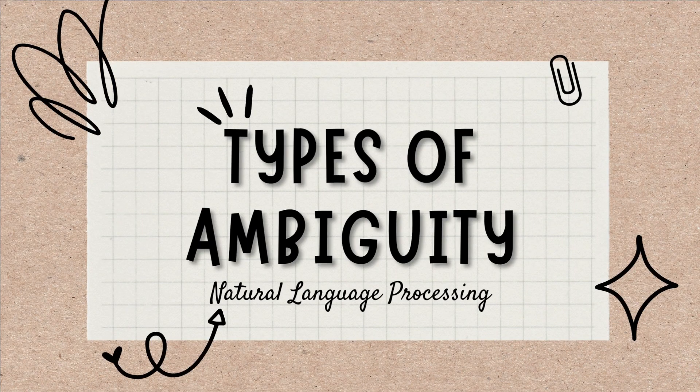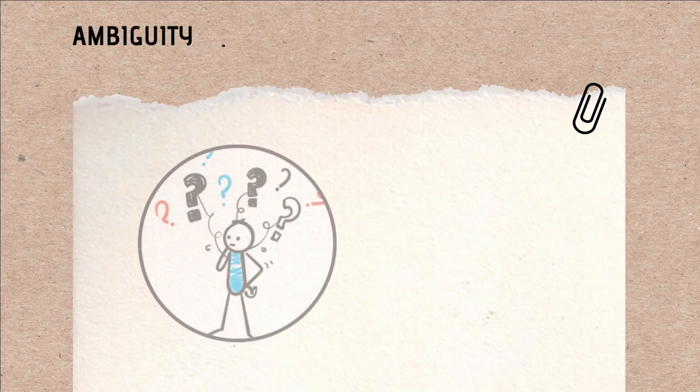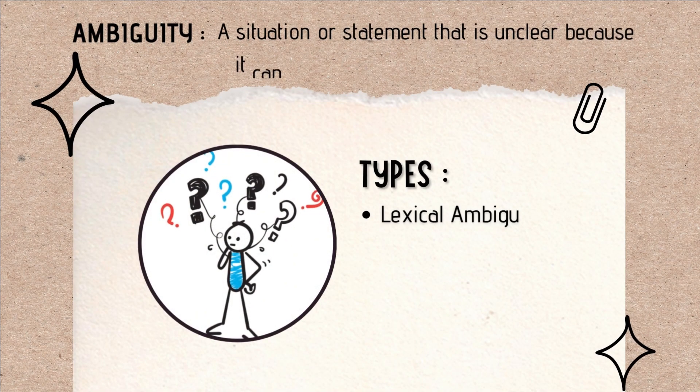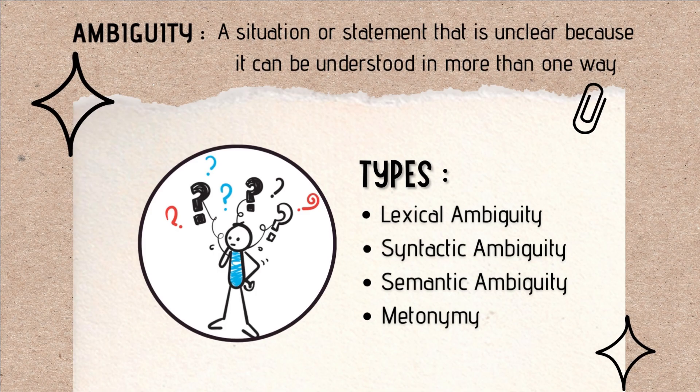Types of ambiguity in Natural Language Processing. Ambiguity is a situation that is unclear because it can be understood in more than one way. There are a few types of ambiguity: lexical ambiguity, syntactic ambiguity, and metonymy.